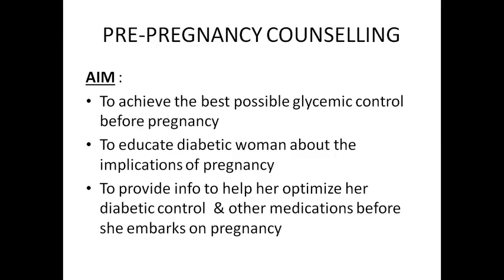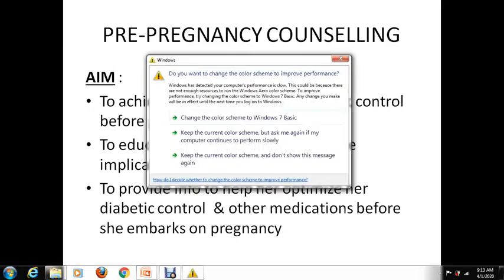Pre-pregnancy counseling is very important. The aim is to achieve the best possible glycemic control before pregnancy, because once she gets pregnant, the organogenesis period is critical. If she has hyperglycemia during organogenesis, there are increased chances of congenital malformations. The prime aim is to achieve the best possible glycemic control prior to pregnancy.